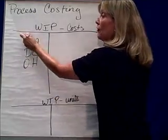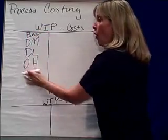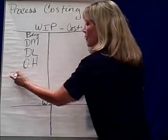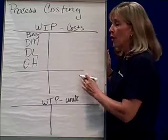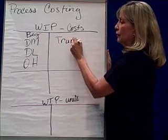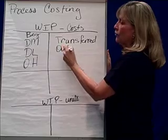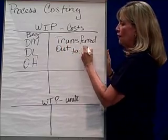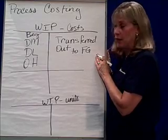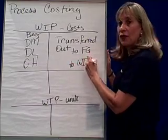We might have some costs associated with the beginning inventory. So this is all the costs that that manager is accountable for. The manager then has to figure out how much of those costs were transferred out — transferred out either to finished goods if the products are completed. In other words, that's the cost of goods manufactured. Or they're transferred out to the next work-in-process department.